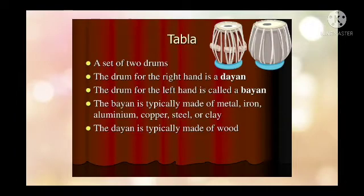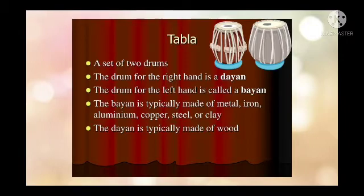Tabla. Tabla is a set of two drums. The right hand side is called dye and the left hand side is called bine. Bine is made up of metal — iron, aluminium, copper, steel, or clay — and dye is made up of wood. Basically, tabla consists of two drums: the left hand side bine and the right hand side dye.